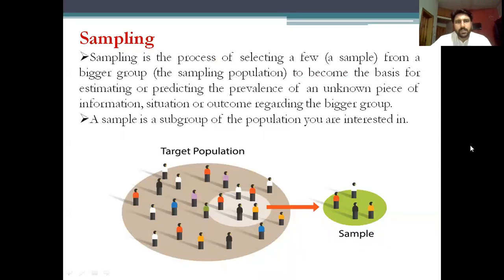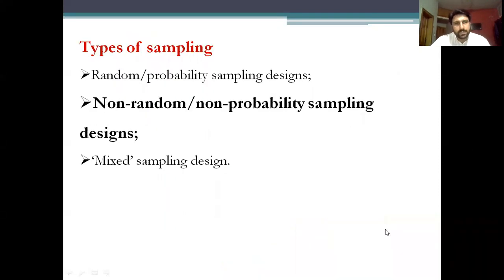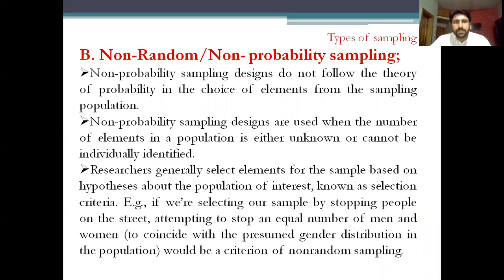A sample is a subgroup of the population you are interested in. We have talked about different types of sampling: random sampling, non-random, and mixed. Today our topic is non-random, non-probability sampling. Non-probability sampling designs do not follow the theory of probability in the choice of elements from the sampling population — there is no guaranteed probability of selection.